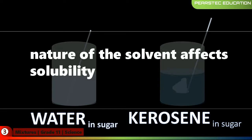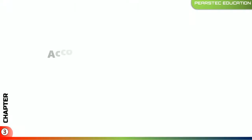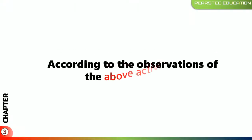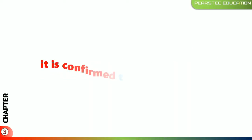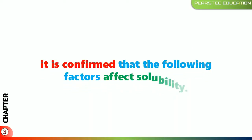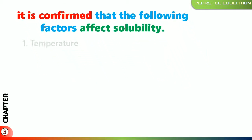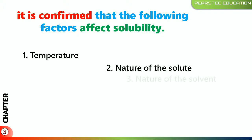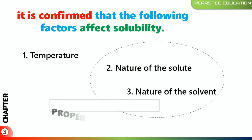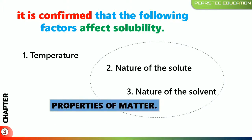According to the observations of the above activities, it is confirmed that the following factors affect solubility: number one, temperature; number two, nature of the solute; and number three, nature of the solvent. The nature of the solute and nature of the solvent are called properties of matters, because they are related to the matter being used. Temperature is an external factor.